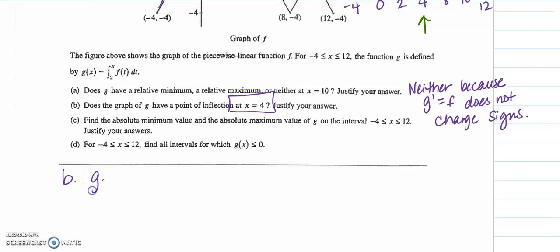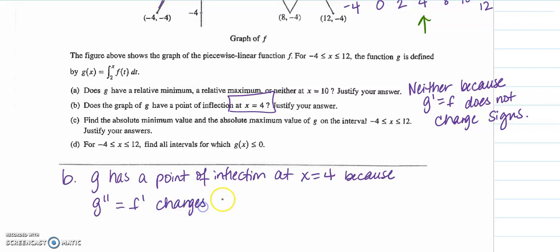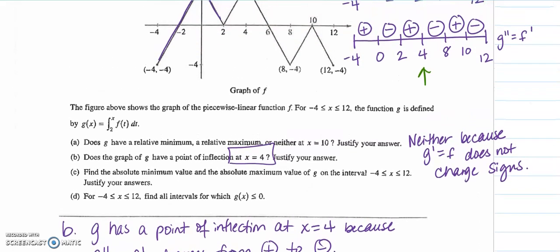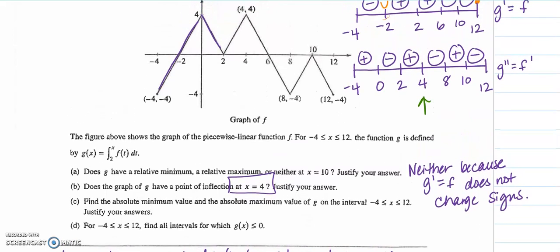Part b: g has a point of inflection at x equals 4 because g double prime equals f prime changes from positive to negative. You could also say that at x equals 4, f changes from increasing to decreasing, and that might be a faster explanation and it would also work.